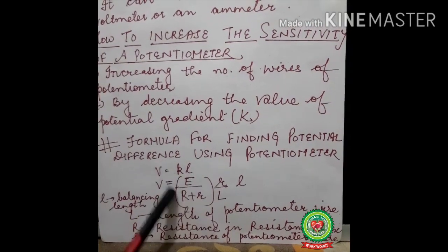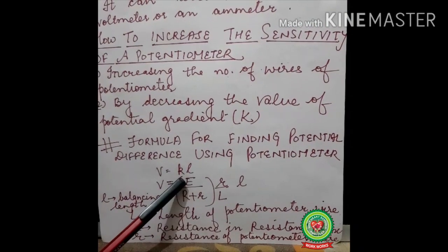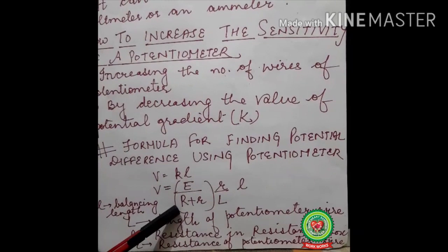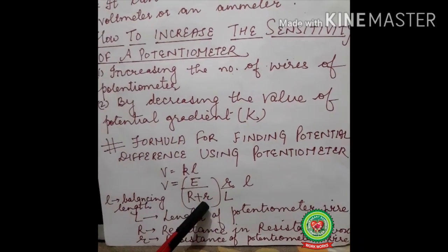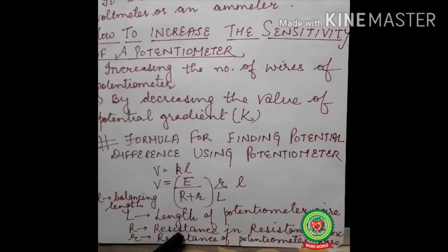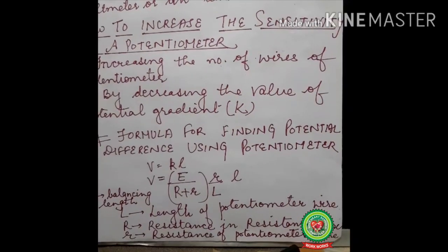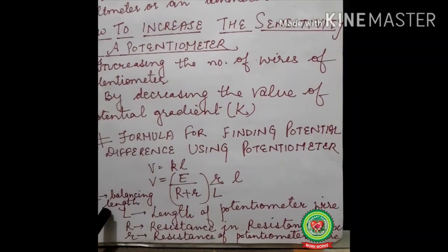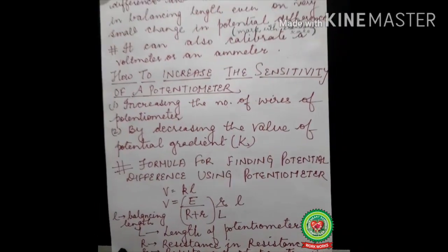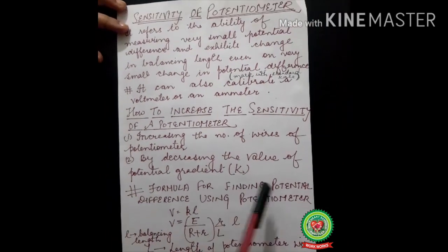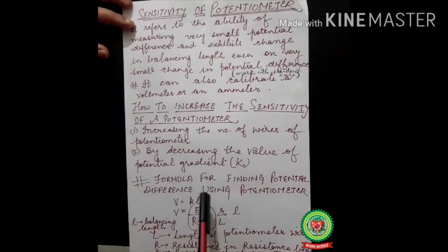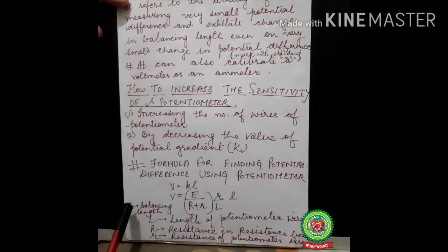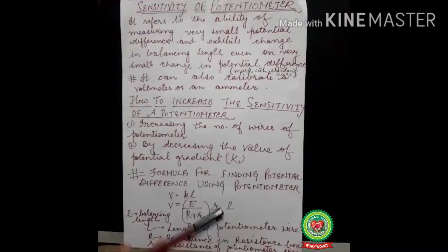Next is the formula for finding the potential difference using a potentiometer. The formula is V = K × L, where K = E / (R + r) — E is the EMF of the battery, R is the resistance in the resistance box, small r is the resistance of the potentiometer wire, and L is the balancing length. This is how we find the potential difference of an instrument using the potentiometer. Thank you, students.